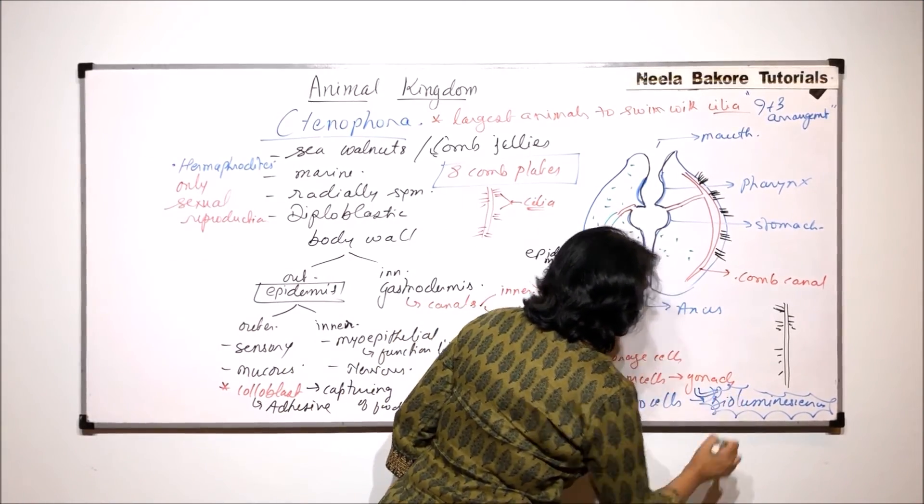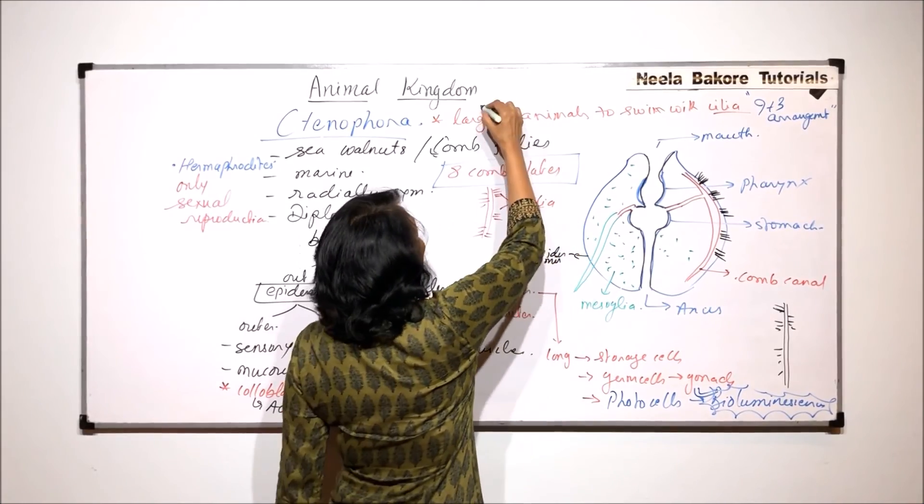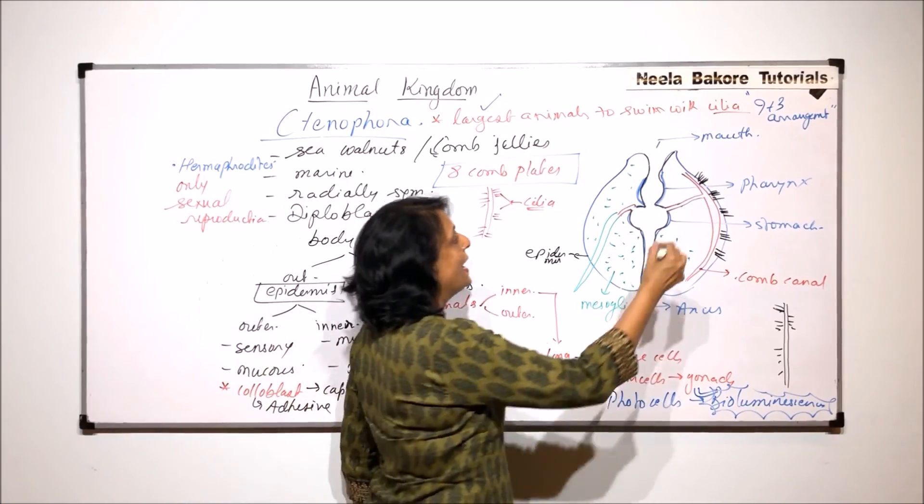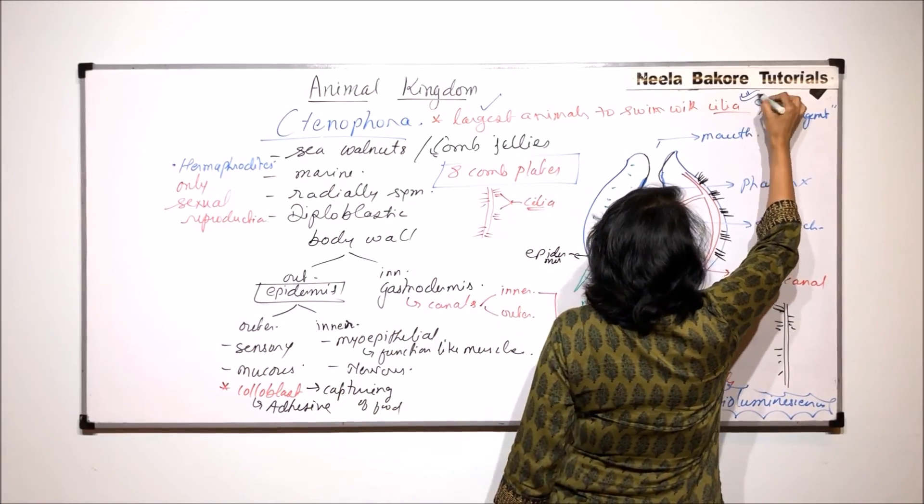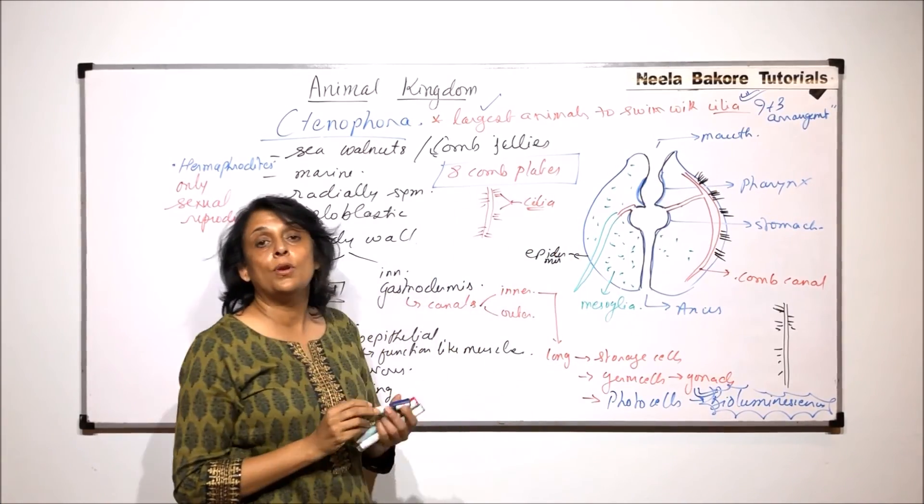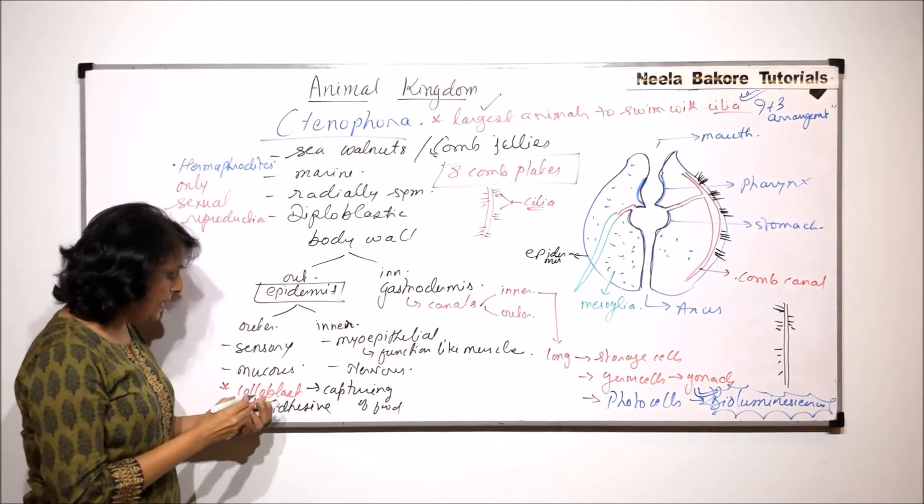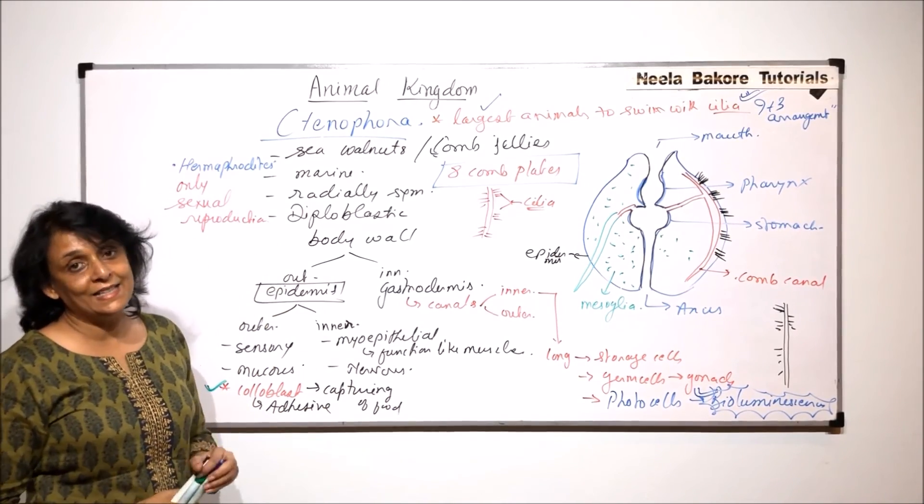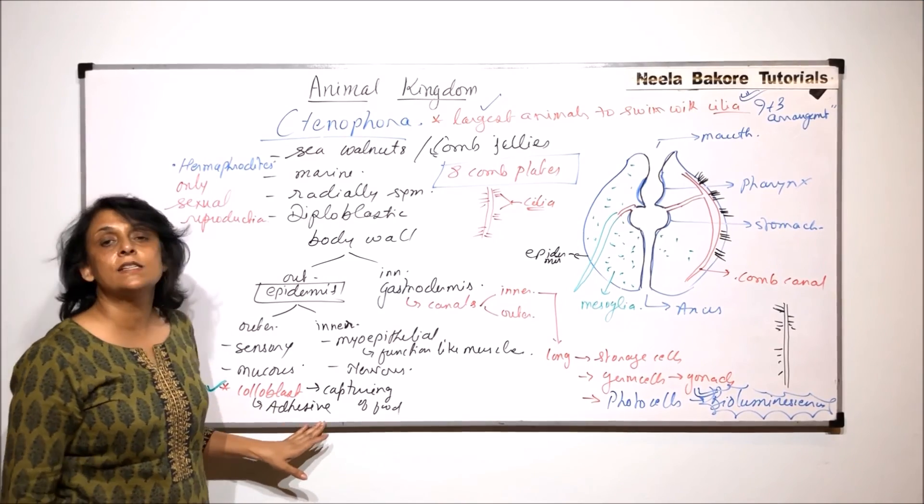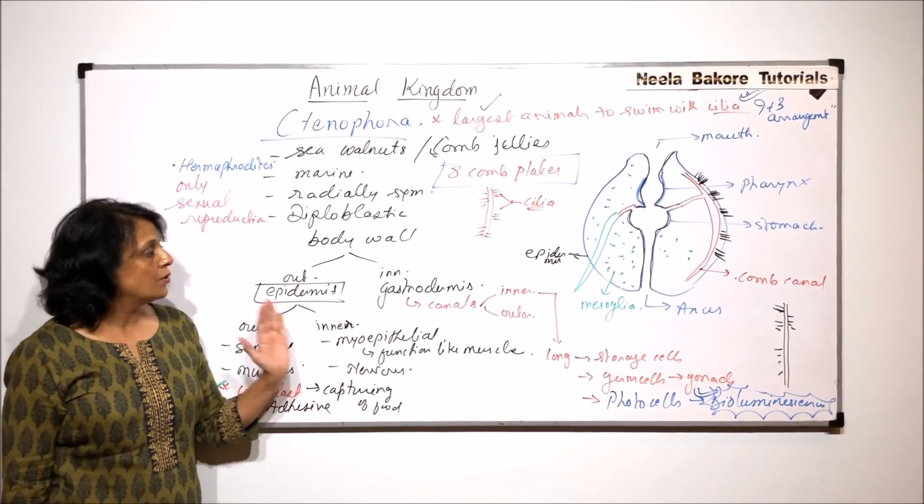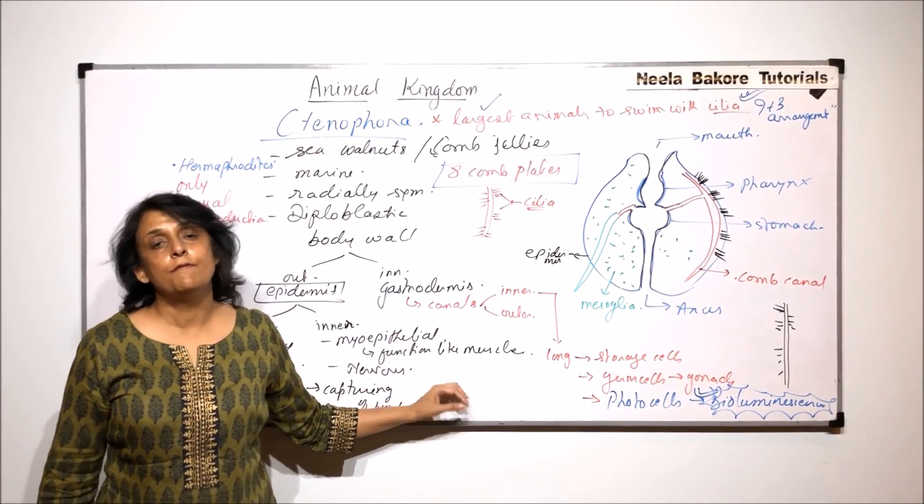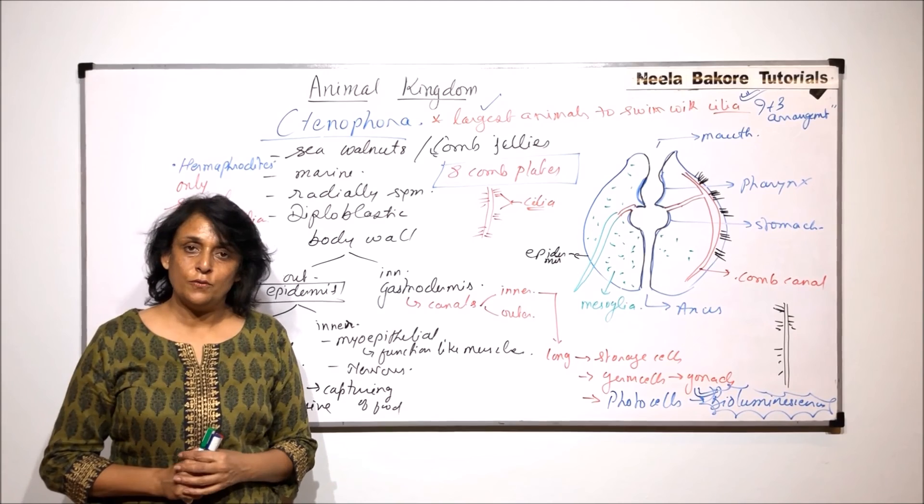They show bioluminescence. They are the largest animals which swim with the help of cilia. And cilia shows nine plus three arrangement. And then these coloblast cells which are adhesive cells. These adhesive cells are present normally on the tentacles. So this is the information that we normally talk of when we talk of the phylum Ctenophora.